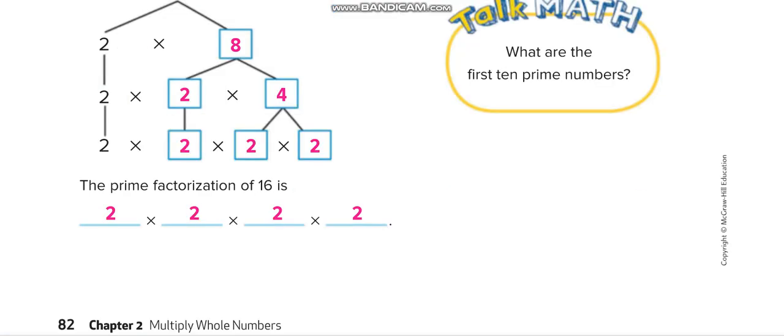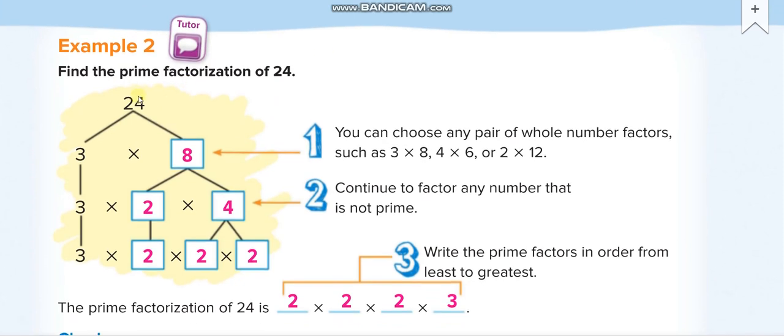Next, 24. First they did 3 times 8. You cannot break 3 down, so bring it down as it is. 8, 2 times 4, then this 4, 2 times 2. So the prime factorization of 24 is 2 times 2 times 2 times 3.